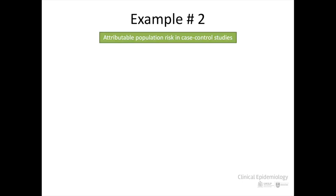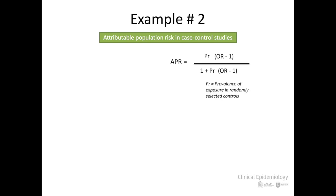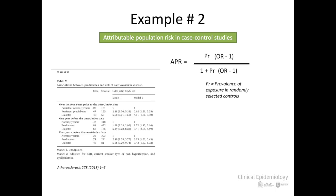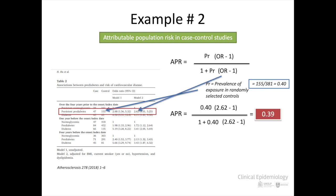Example number 2. In the previous example, data from a cohort study was used. How is the APR calculated in a case-control study? The previous formula can also be used if we know the prevalence of the exposure in the control group, as long as the controls have been randomly extracted from the population, and the corresponding OR. Taking as an example the article reviewed in the previous activity, we can calculate the APR. Table 2 contains the data we need. The prevalence of persisting prediabetes in the cases group was 40.6%, and the adjusted OR was 2.62. Substituting in the formula, we obtained an APR of 39.6%.